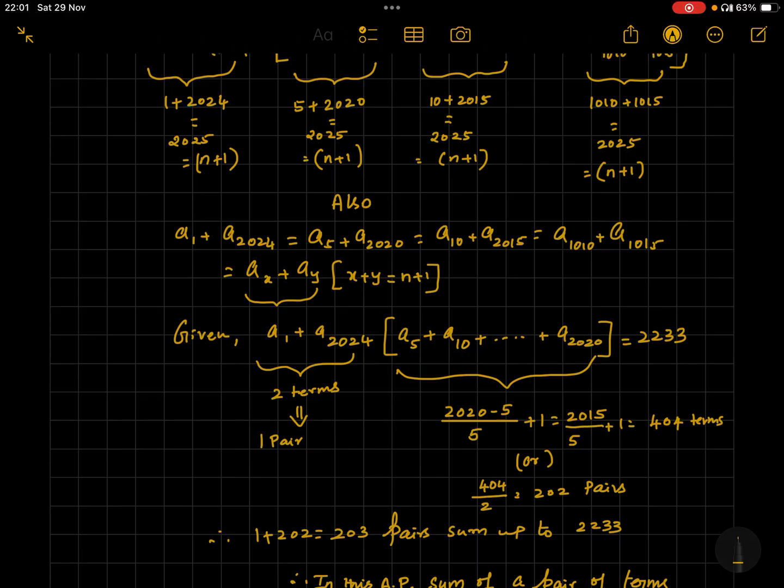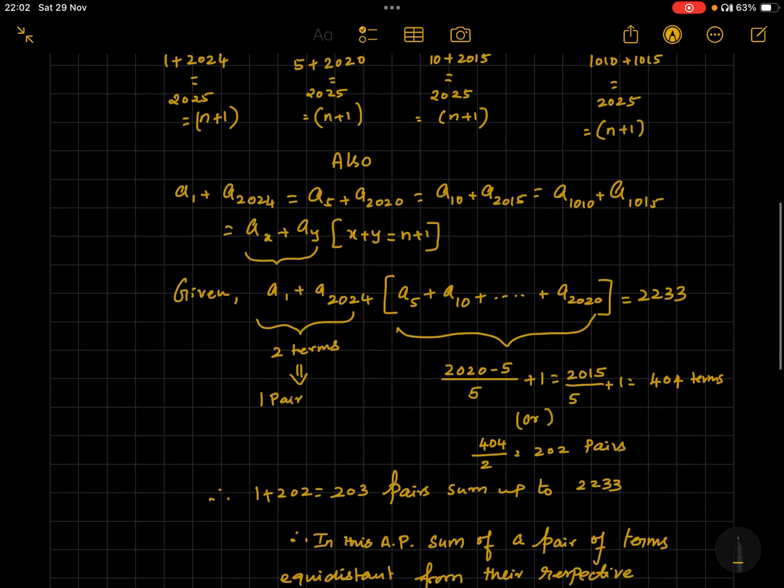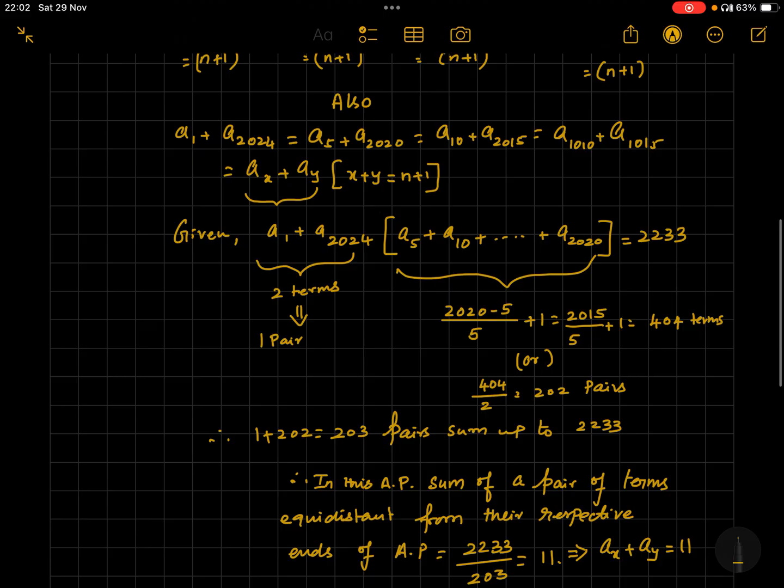Try to find out how many terms are there within the parenthesis, for which you can use the usual formula l minus a by d plus 1, where l is the last term, a is the first term, d is the common difference, and we add 1. And we will see in this case it is 2020 minus 5 by 5 plus 1, which equals 404 terms.